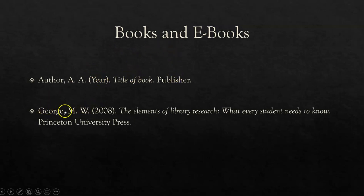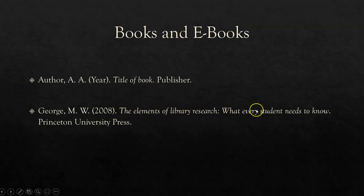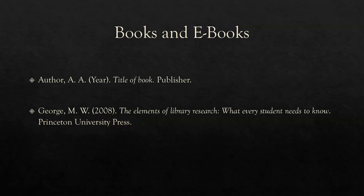So here's an example. For a book by M.W. George, it's George comma M. period space W. period space, bracket year of publication, close the bracket, period, space. Here is the title of the book: 'The Elements of Library Research: What Every Student Needs to Know,' period. Note the capitalization. Then the name of the publisher, Princeton University Press, period. That's an example of a book written by a single author. That's your basic formatting for a book.